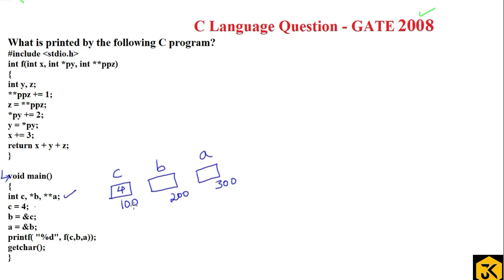I am assuming c is stored at location 100, b at 200, and a at location 300. Now b contains the address of c, which is 100, so it is connected to c. And a contains the address of b — since a is a double pointer, it can store the address of b, so it contains 200.